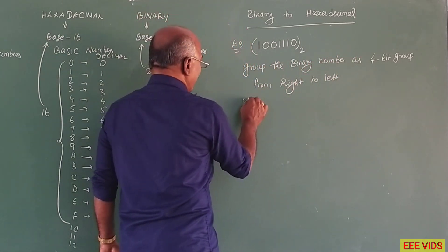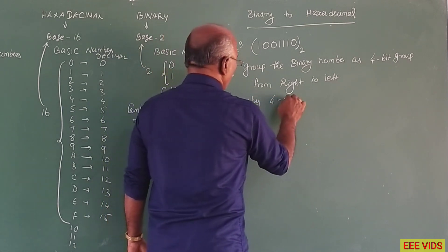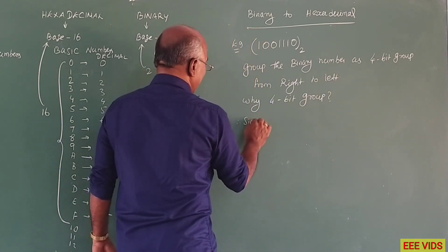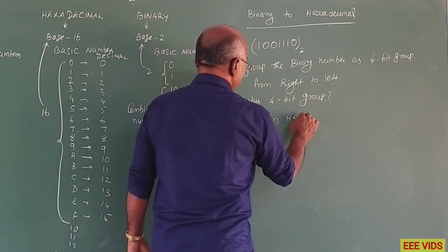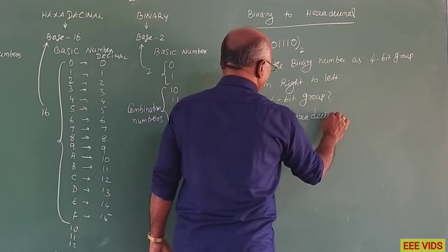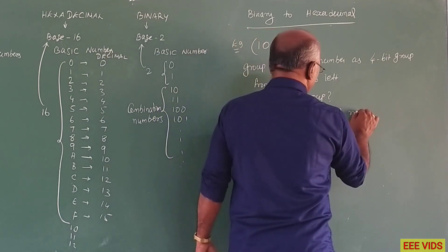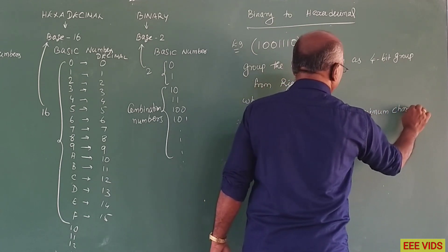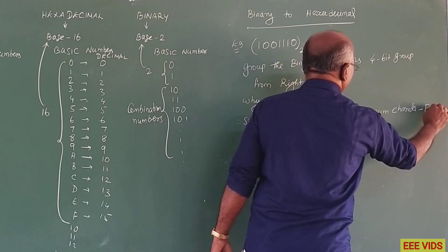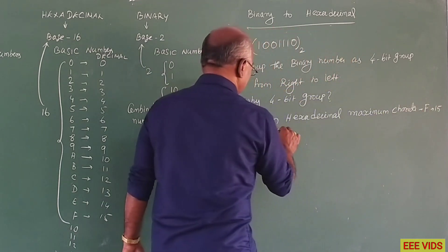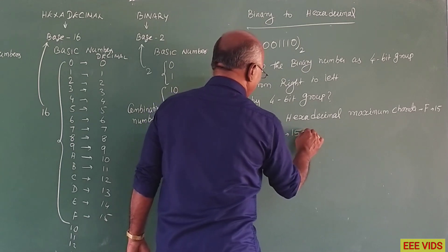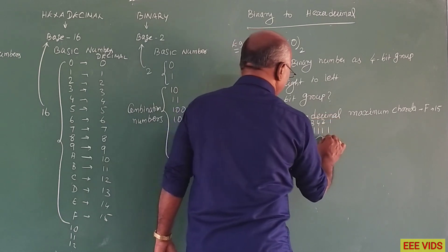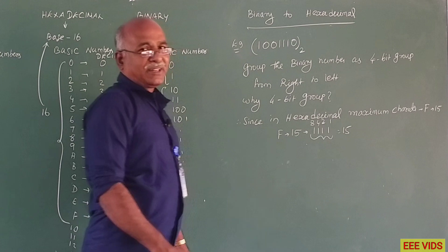Why a 4-bit group? There are 3-bit groups and 4-bit groups. In hexadecimal, the maximum character is F, which is equal to 15. One digit's maximum value is F = 15. So if we add 4 bits — 1, 2, 4, 8 — we get 15. So that is why we use a 4-bit group.